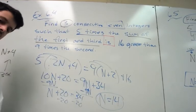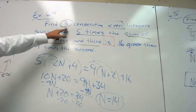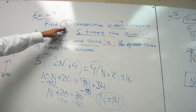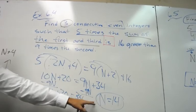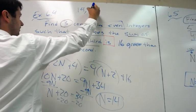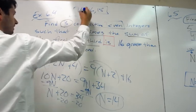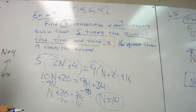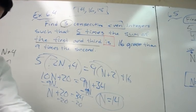n = 14 is not the final answer — we need three consecutive even integers. So the answer is 14, 16, and 18. That's how you do those word problems, and that wraps up lesson 6.